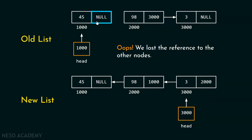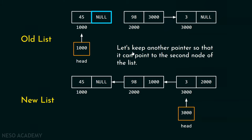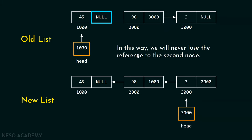If we update the link part of the first node, we lose the reference to the other nodes. We only have a head pointer pointing to the first node, so if we put null here, we lose all references. We definitely need another pointer to point to the second node of the list.